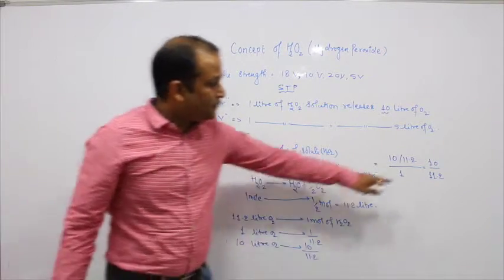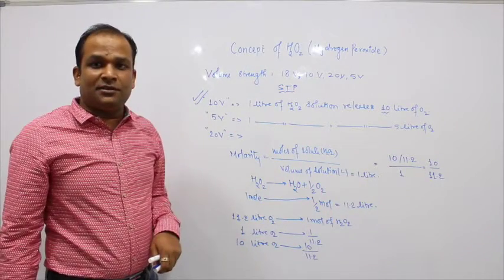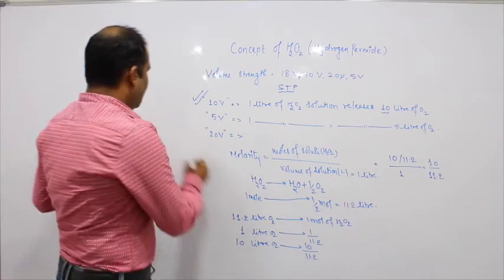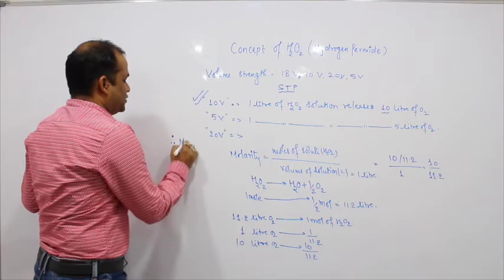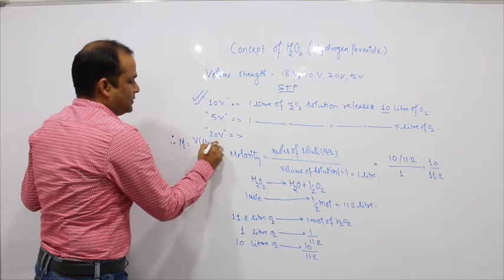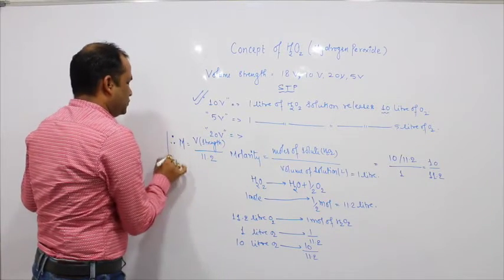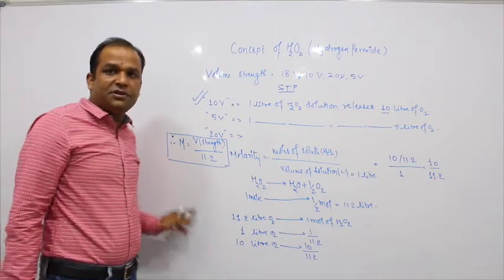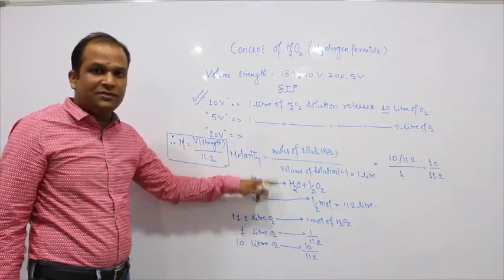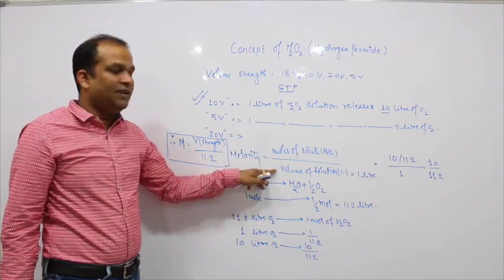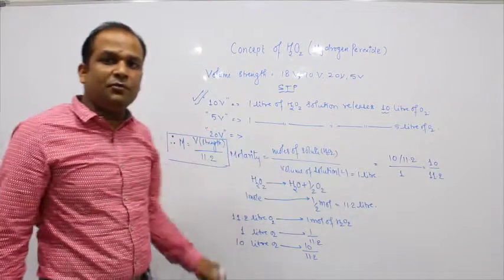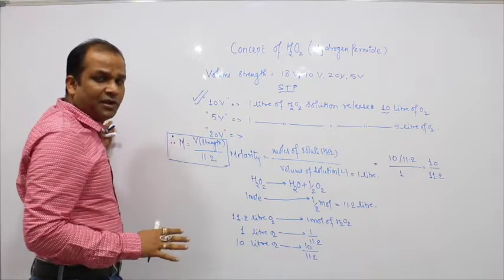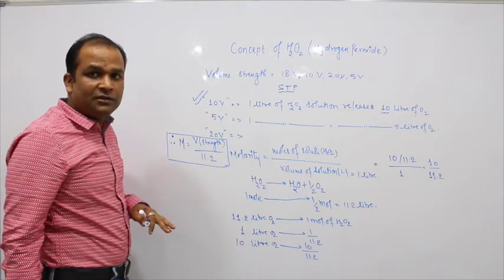Notice that 10 is the volume strength, and dividing by 11.2 gives us the molarity. Therefore, the formula to find the molarity of H2O2 is: Molarity = Volume Strength / 11.2. This is the formula and its derivation. Moles of solute divided by volume of solution in liters gives us molarity — so we can directly use M = V / 11.2.